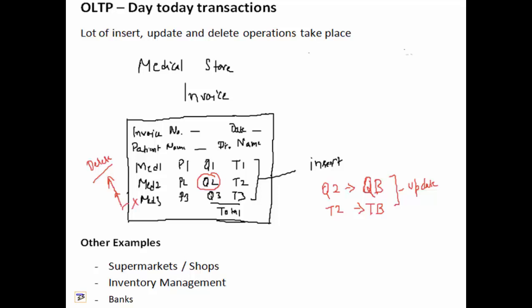Let us consider an example of a medical store. One person purchases medicines from the medical store and receives an invoice. That invoice has invoice number, date, patient name, doctor name and the medicine list. So this is medicine one, its price, price one, its quantity, quantity one and the total of the medicine one.